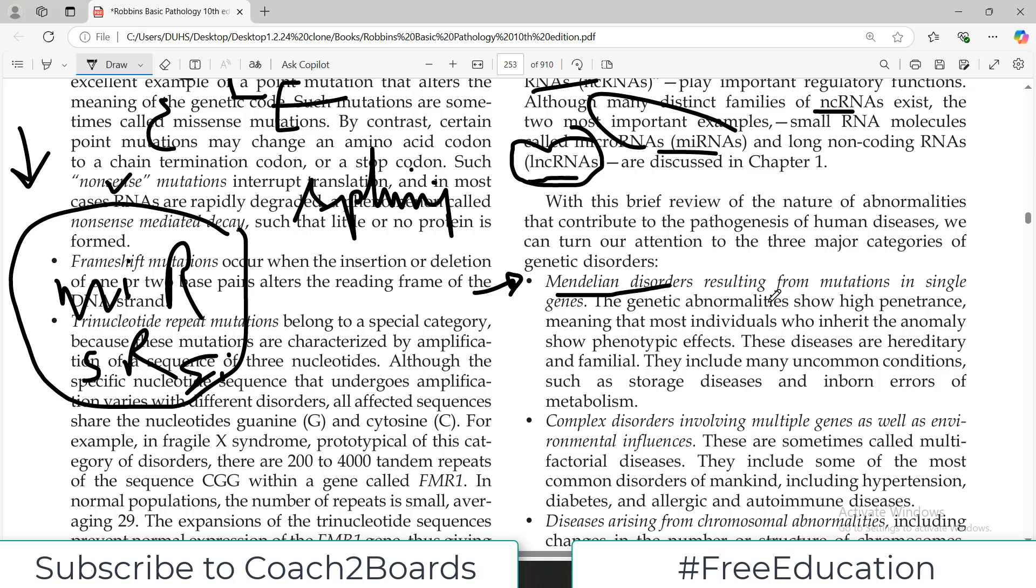Mendelian disorders result from mutations in single genes and the genetic abnormalities show very high penetrance. Penetrance means if the parents have this disorder then the transfer to offspring is high. If this is high, we call that the penetrance is very very high.